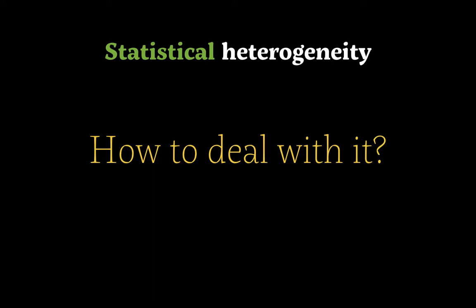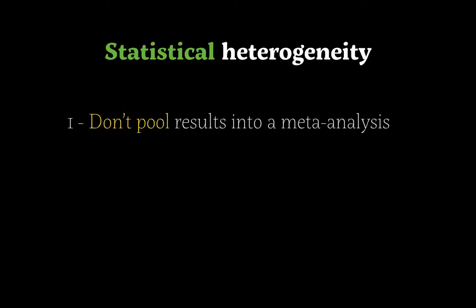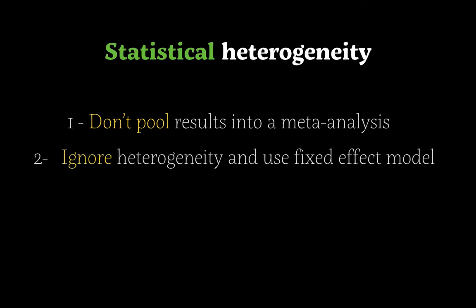So what happens if you find statistical heterogeneity in a systematic review? There are a few options. The first is to not pool the results into a meta-analysis. As noted in the Cochrane Handbook, a systematic review is not required to include a meta-analysis if it's not appropriate.